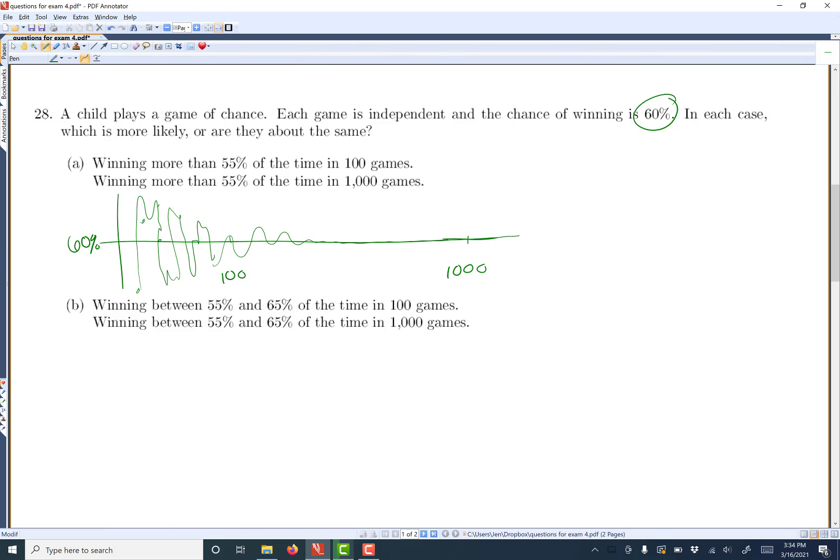So at 100, you might still be bouncing around. By the time you get to 1,000, you'll definitely be a lot closer. And now this is all relative. If you compare 5 and 100, you'll be closer at 100 than you are at 5.